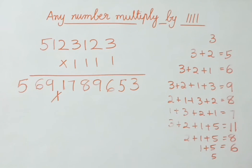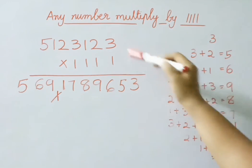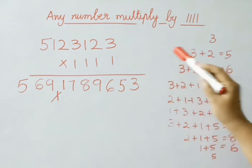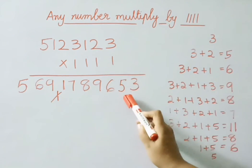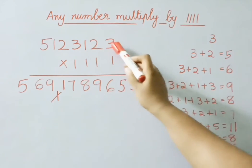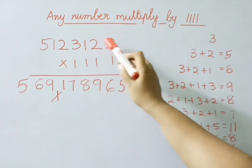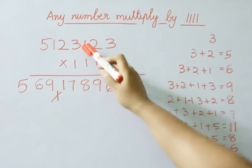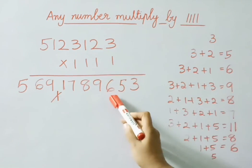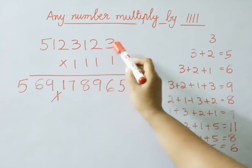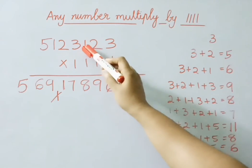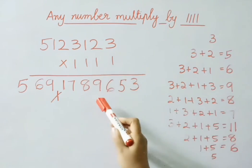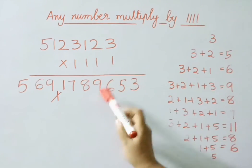Write down 3. Next add 3 plus 2 is 5. Next 3 digits: 3 plus 2 is 5, 5 plus 1 is 6. Now add 4 digits: 3 plus 2 is 5, 5 plus 1 is 6, 6 plus 3 is 9.